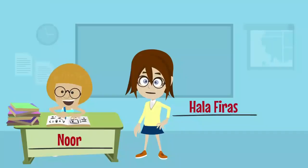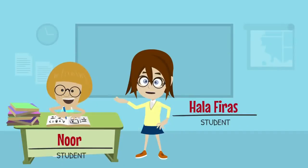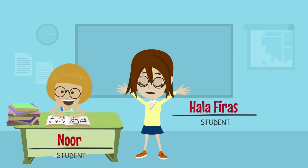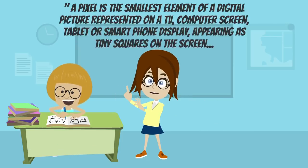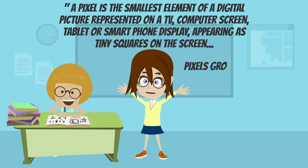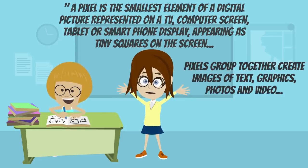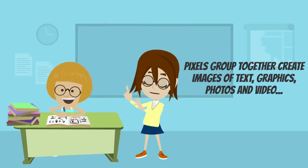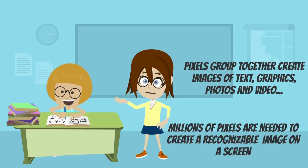A pixel is the smallest element of a digital picture represented on a TV, computer screen, tablet, or smartphone display. Appearing as tiny squares on the screen, pixels grouped together create images of text, graphics, photos, and video.